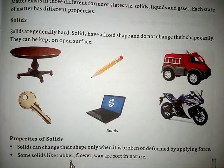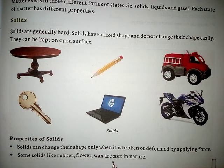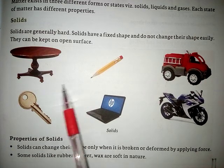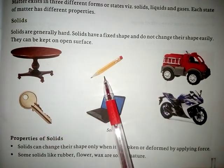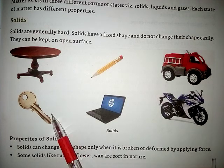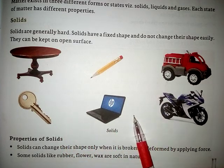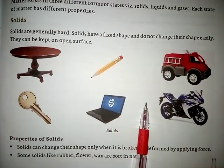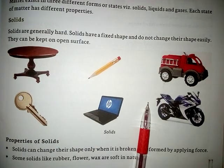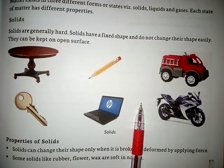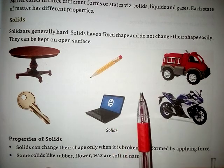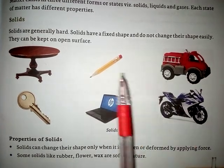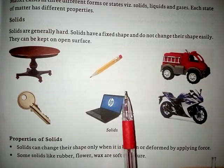Some solids like rubber, flour, and wax are soft in nature. There are solids like table, pencil, toys, key, your laptop, your bike — these are all examples of solids. Yeh sab solid ke examples hain. Inhe todne par hi inका shape change kiya ja sakta hai. Yeh apna aakaar khud change nahi kar sakte. Aur inhe hum surface pe, open area par, kahin bhi rakh sakte hain.